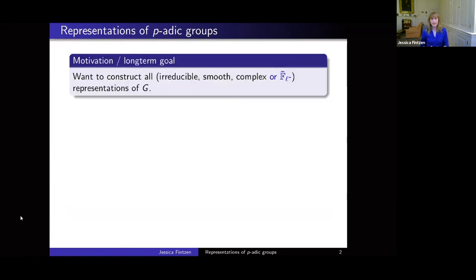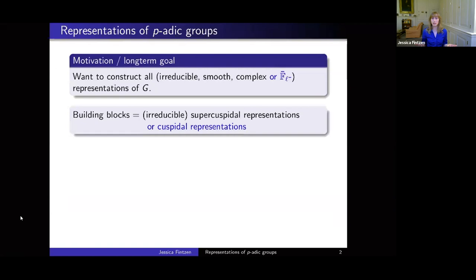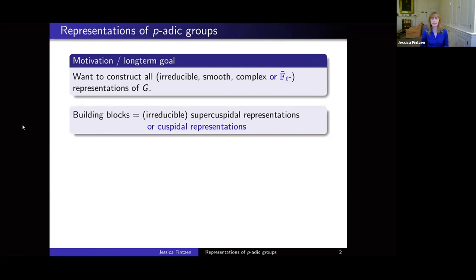So that's the goal — how do we approach this? We know there are building blocks for these representations. In the complex world, they are the supercuspidal representations; in the modular world, they are the cuspidal representations. The definition is essentially the same as for finite groups: these are representations that do not occur in proper parabolic induction from a proper parabolic subgroup. These building blocks are very mysterious and difficult to write down, and it took mathematicians a long time to produce an exhaustive list.